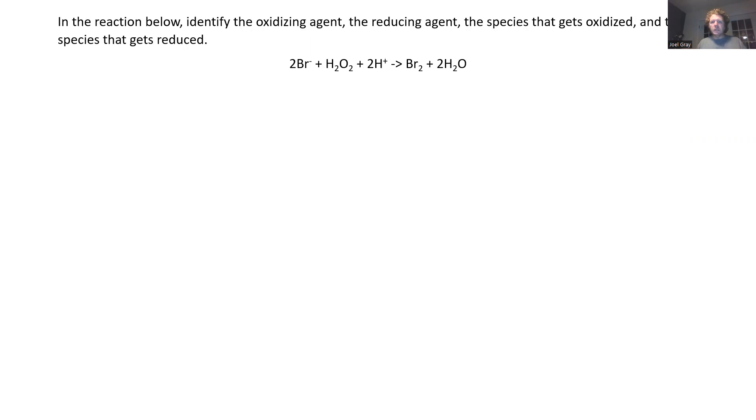So what we need to do for this sort of question is we need to identify the charges of all the different atoms. Now, bromine is doing us a favor, it's showing that it's minus one, because that is indicated there.